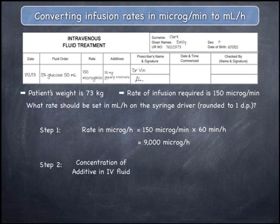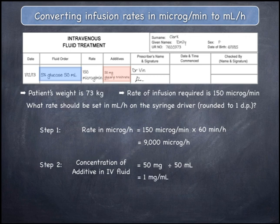In the second step, calculate the concentration of the 50 milligrams of glycerol trinitrate additive in the 50 mils of 5% glucose. This is equal to the quantity of glycerol trinitrate — 50 milligrams, as read from the order — divided by the volume of the IV fluid, which is 50 mils, giving 1 milligram per mil. This concentration has been expressed in milligrams per mil and should be changed to micrograms per mil, because the quantity in step two is expressed in micrograms rather than milligrams.